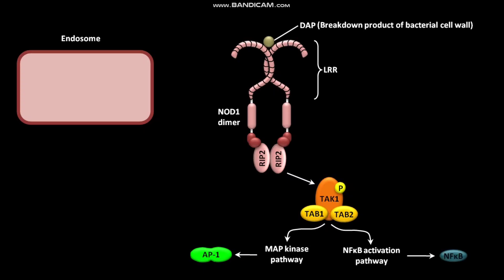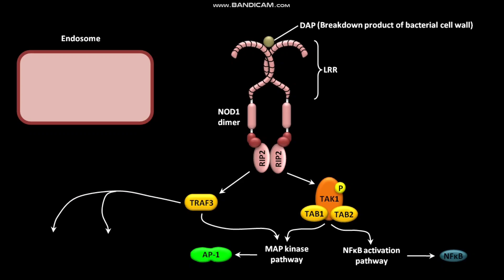In dendritic cells, the binding of RIP2 to NOD1 also activates the TRAF3 complex. Activated TRAF3 complex leads to the MAP kinase pathway. The activation of the TRAF3 complex also leads to the phosphorylation and activation of IRF3 and IRF7.